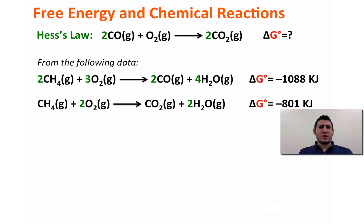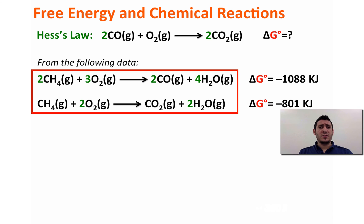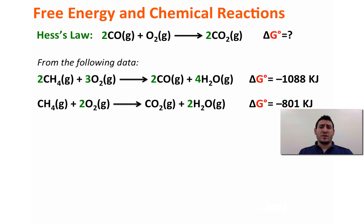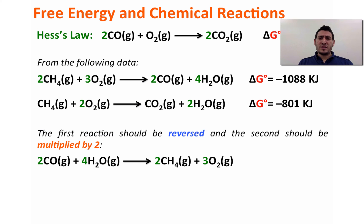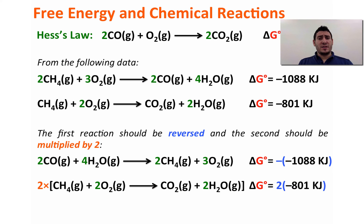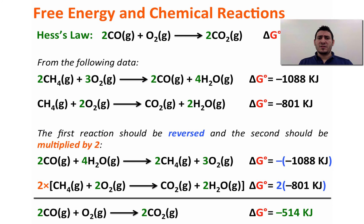Another way of calculating ΔG° is using Hess's Law. Consider the overall reaction of carbon monoxide and oxygen to give carbon dioxide, where we don't know ΔG°. However, this reaction is the overall sum of two steps for which we know the ΔG° of each. Based on Hess's Law, the first reaction should be reversed — so we reverse the sign of its ΔG° — and the second should be multiplied by two, so we also multiply its ΔG° by two. Summing these two steps gives the overall reaction, and summing the two ΔG° values gives ΔG° of the overall reaction equal to −514 kilojoules.